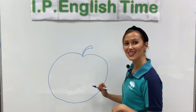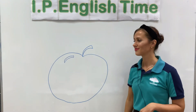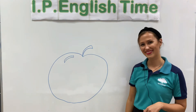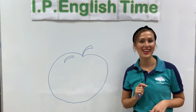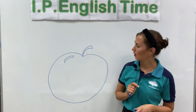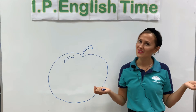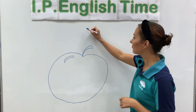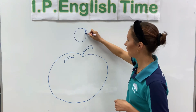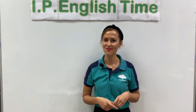Do you know what it is? Yes, it's an apple! And what is the beginning letter? Letter A. A is for Apple.